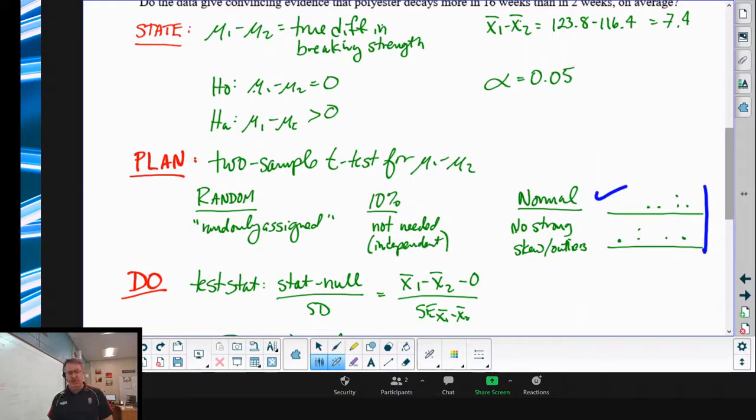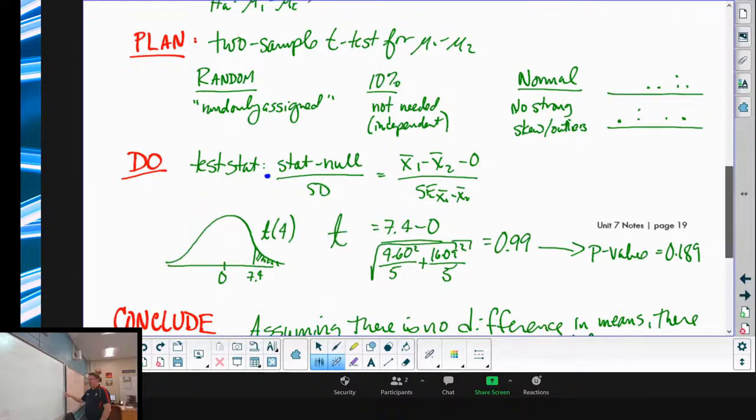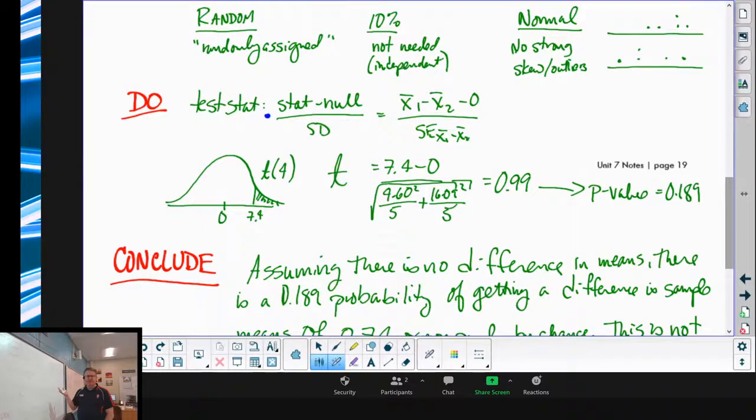For the do: stat minus null over standard deviation. And again, remember we have you guys do this part here so that it gets stuck in your head and also just shows that you're a smart AP student. We have our regular formula here. When we plug stuff in, so here's my graph, df is four because we have two samples of five, we don't have to worry about the smaller one. And then over here for the division stuff, these standard deviations we got from running the one variable stats up above. Run it all out, we get a t value of 0.99, and when we run it with four degrees of freedom we get a p-value just under 19%, so it doesn't look like polyester goes much faster.